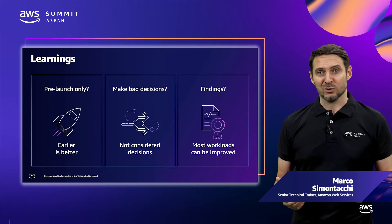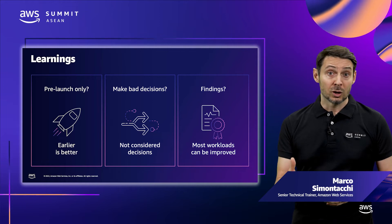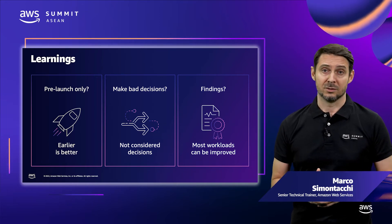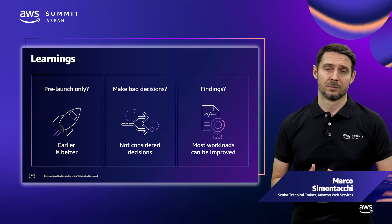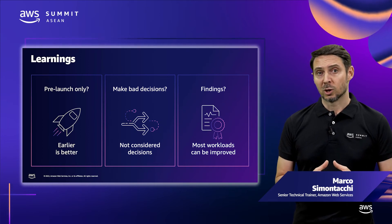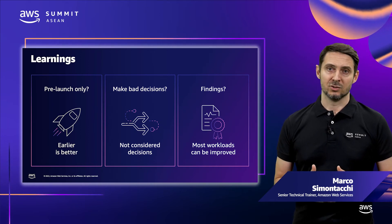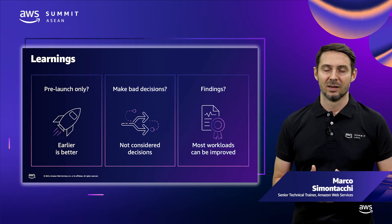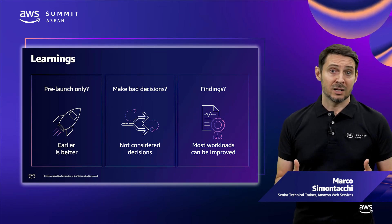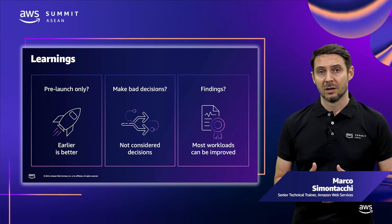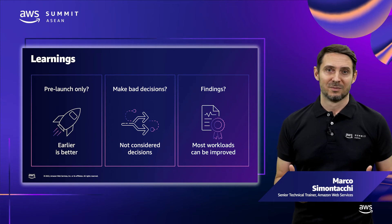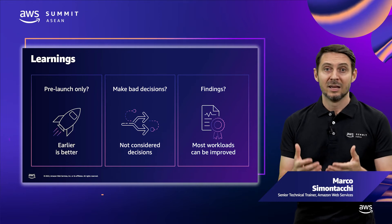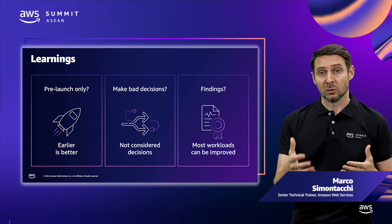What did we learn from doing reviews? Review early in the lifecycle — it's quicker and easier to fix things, and can influence design. The most common problem we see is not bad decisions, it's people neglecting a decision. Most workloads have high-risk items that need to be addressed. Finding them is not a bad thing — they were always there. If you address them, that's one less thing that can damage your business.